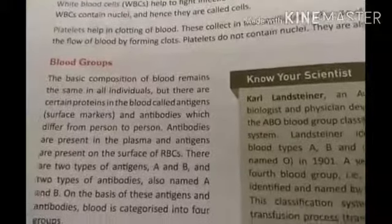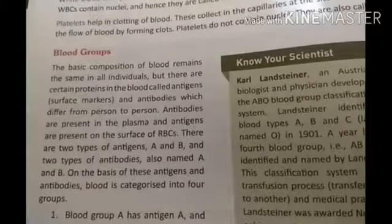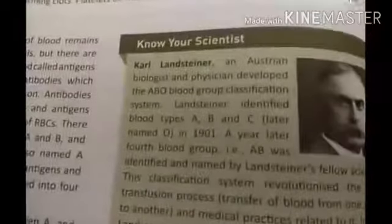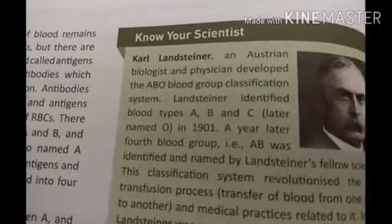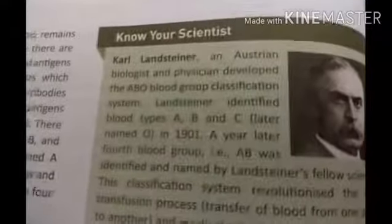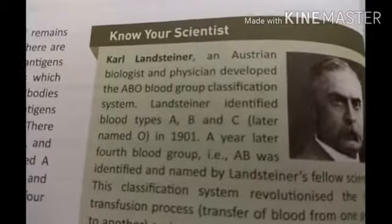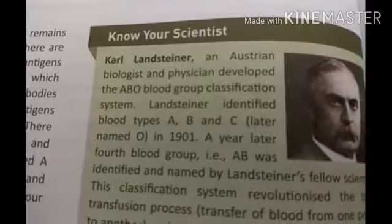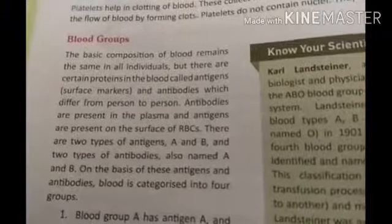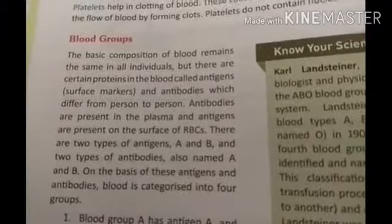We also learned about platelets. Now our next topic is blood groups. Humans have four types of blood groups. This was suggested by Karl Landsteiner, an Austrian biologist and physician, who developed the ABO blood group classification system. Every human being has a blood group of either A, B, AB, or O.